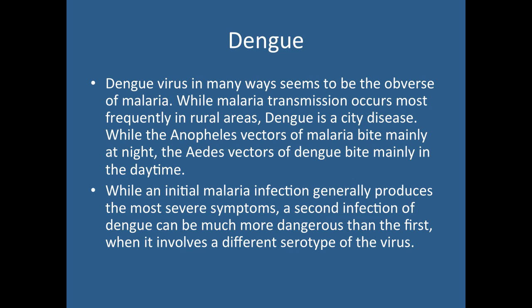Dengue virus is in many ways the inverse of malaria. It's typically transmitted in cities versus malaria, which is rural. While the Anopheles mosquito bites at night for malaria, Aedes bites during the day. While initial malaria infection generally produces more severe acute symptoms, dengue typically has less acute symptoms initially — but when you get infected a second time, that's when dengue hemorrhagic fever and dengue shock syndrome can develop.